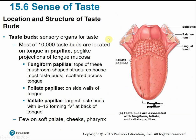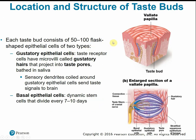Taste buds are the sensory organs for taste. There are roughly 10,000 taste buds located on the tongue in papillae — small bumps or projections on the tongue's surface. The fungiform papillae are most widespread, scattered across the tongue. The foliate papillae are on the lateral aspects toward the back. The vallate papillae form an upside-down V-shaped row at the back. Each taste bud consists of 50 to 100 flask-shaped epithelial cells.